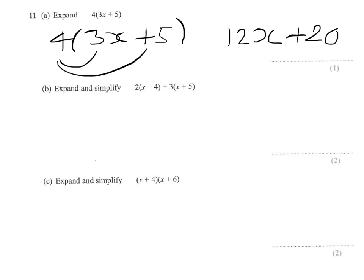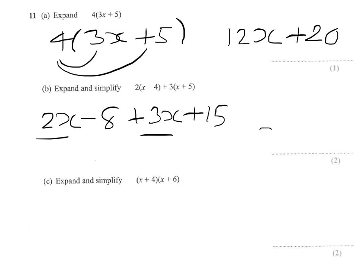Moving on to the next one, I'll expand. 2 lots of x gives me 2x, 2 lots of minus 4 gives me minus 8, plus 3 lots of x gives me 3x, plus 3 lots of 5 gives 15. And we have to simplify, so we bring our x terms together. We have 2x and 3x, which gives me 5x. Then putting the minus 8 and the 15 together — 15 subtract 8 — which is 7.